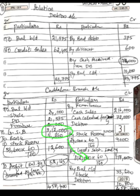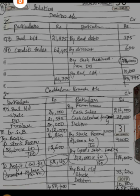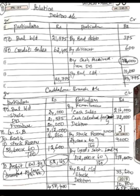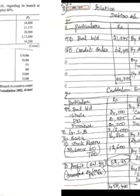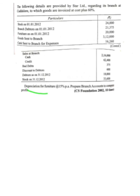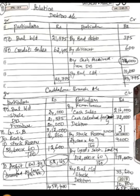Let us check the question once more to ensure nothing is missed. The depreciation on furniture at 15% per annum is mentioned, but it is not related to this branch account, so no depreciation calculation is needed here. We have now come to the end of this question. I hope you have understood. If you have any doubts, please write them in the comment section. Thank you.